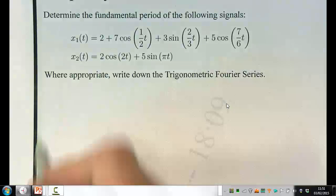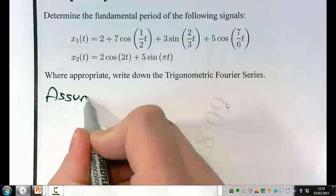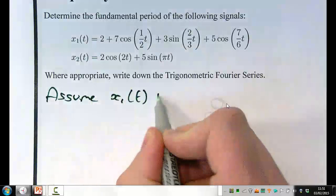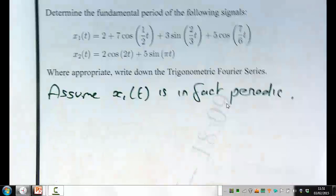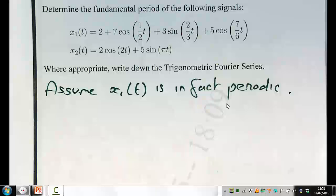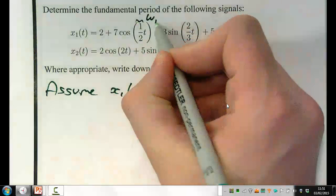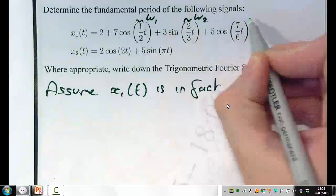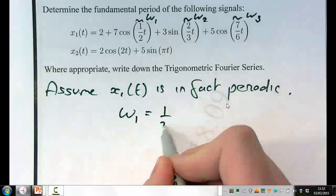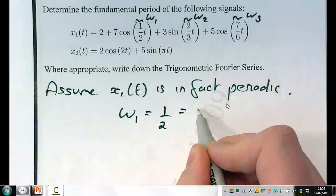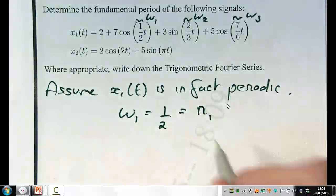So what that means is, all your sines and cosines are going to have frequencies that are an integer multiple of a fundamental. So if we call this frequency omega 1, omega 2 and omega 3, then omega 1, which equals a half, should equal some multiple, and I don't know what it is, of omega 0.